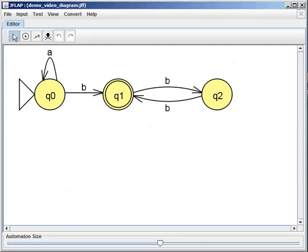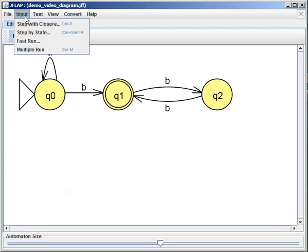So now I finally want to look at this step with closure option that J-flap has, that we haven't looked at until now.